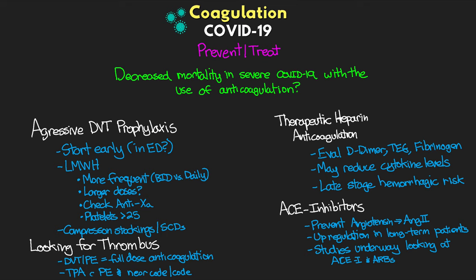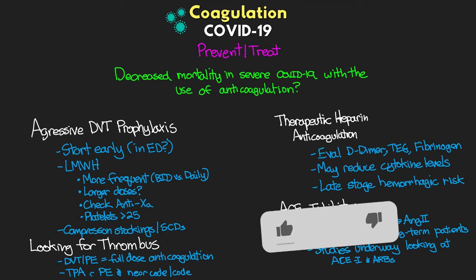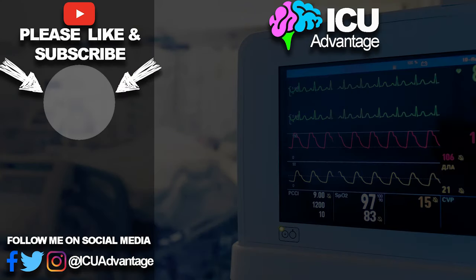Those are some of the things we're potentially doing to prevent or treat patients from progressing to serious stages of COVID-19 and to reduce the coagulopathies and clotting issues that can lead to increased mortality. Hopefully this lesson gave you a good picture of what's happening with coagulation in these patients — why it's happening, what to look for, and how to prevent and treat it. Thanks so much for watching; please like, subscribe, and check out the Patreon page for more content.